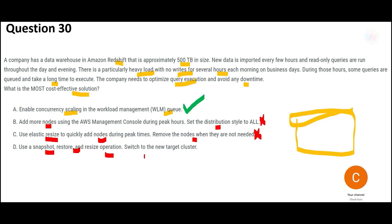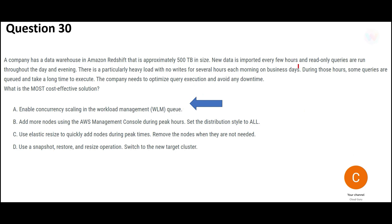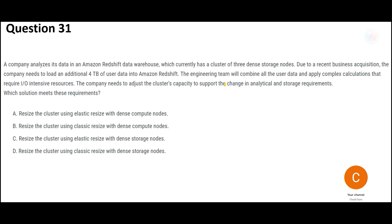Option D suggests using a snapshot, restore, and resize operation, then switching to a new target cluster. Taking a snapshot takes two to three hours — by then the query itself may have already executed. Creating a snapshot, restoring, and resizing takes hours, and you would need to do this every single morning. Option D is the worst option. The final answer is Option A — Concurrency Scaling.